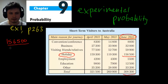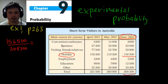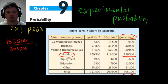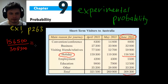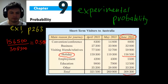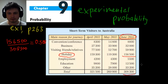So 156,500 divided by 308,300 gives us the probability. We're expressing this as a number between zero and one — dividing on a calculator gives 0.508 to three significant digits, so approximately a 50% probability that people came to Australia for holiday reasons in June.